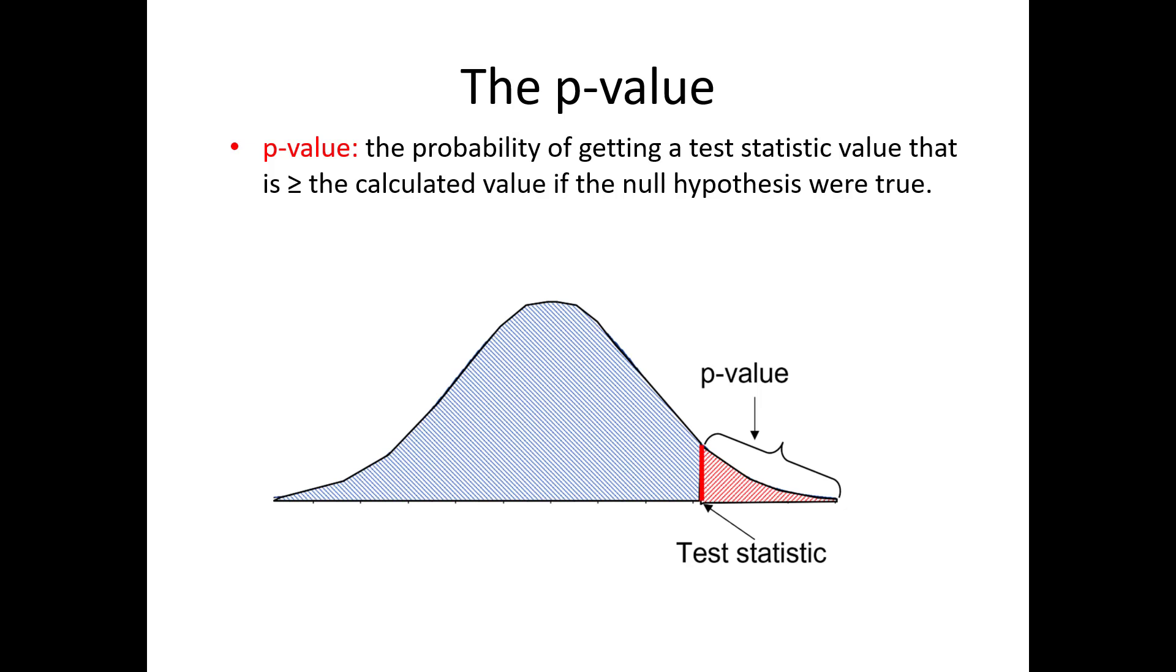Think about what this means. The larger the test statistic, the smaller the area on the right, which means you are less likely to see such a value if the null hypothesis is true. That is to say, the larger the test statistic, the smaller the p-value, and the stronger the evidence against the null hypothesis.